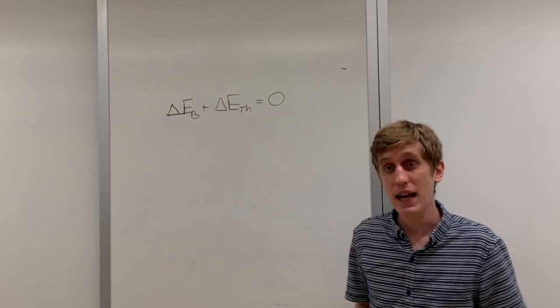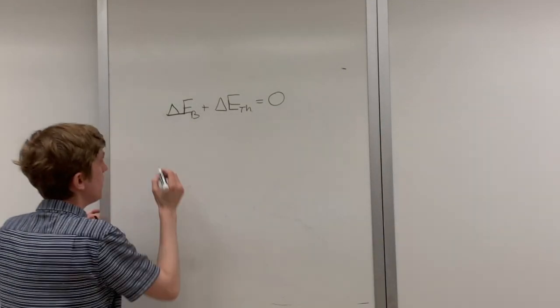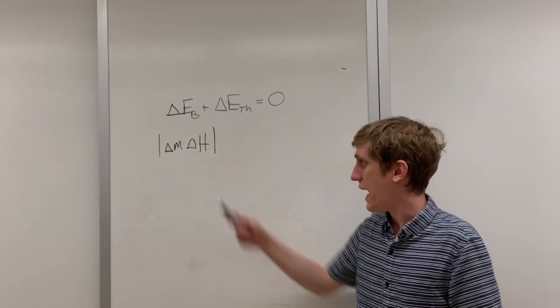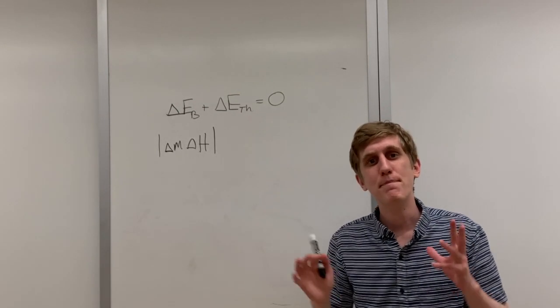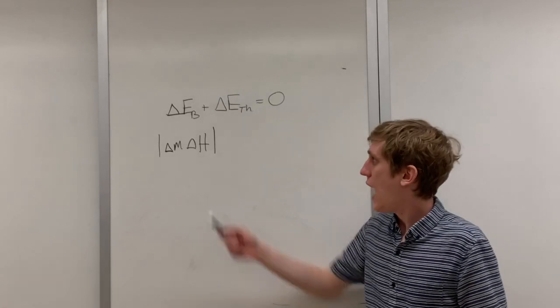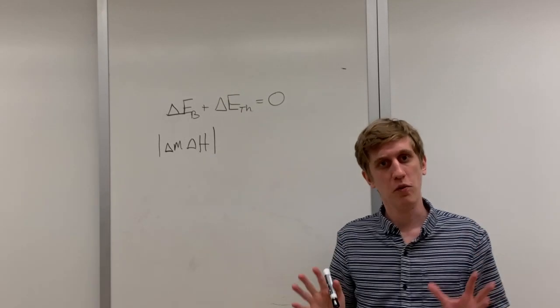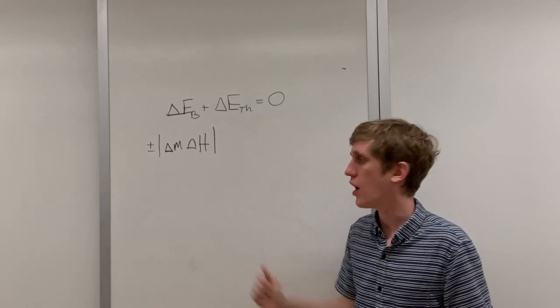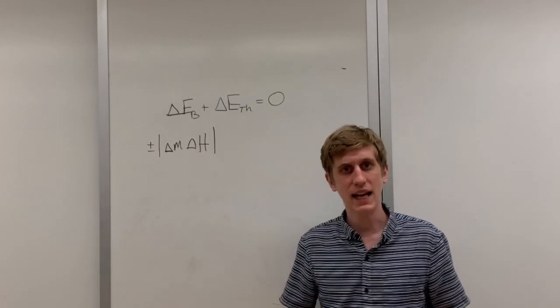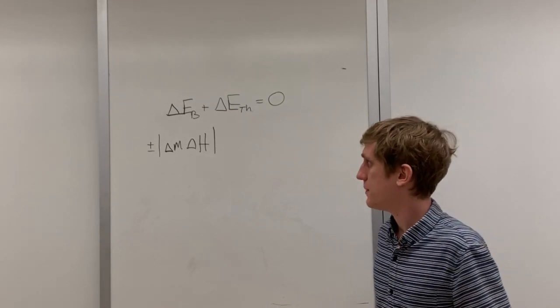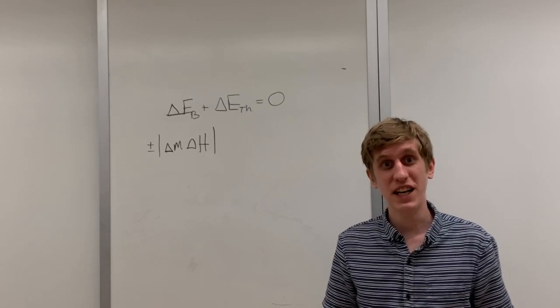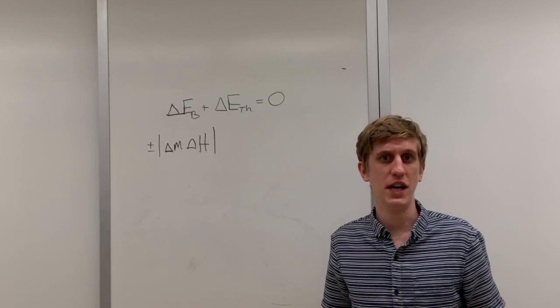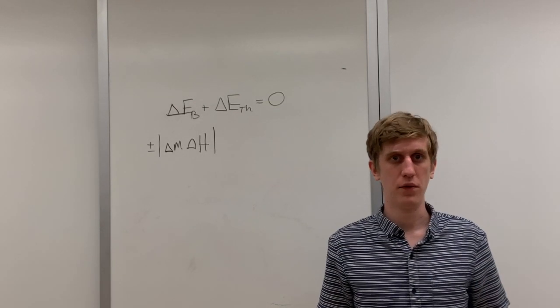The latent heat or enthalpy just describes how much energy we have to put in or take out of the bond energy system in order for the phase to change and it is represented by an H. Writing this piece out then this becomes delta M delta H where delta M is the amount of mass that changed its phase and delta H is the enthalpy we talked about. Notice I put absolute value signs on this term and a plus or minus out in front. There's a reason for that.